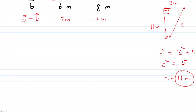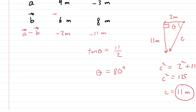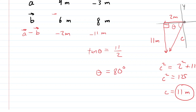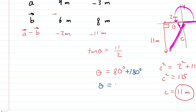For Part J, we need this angle. The tangent of that angle equals the side opposite over the side adjacent. Taking the inverse tangent of 11/2 gives about 80 degrees. However, we must report this angle carefully. Superimposing the axes at the origin, to get from the positive x-axis to this vector, we travel 180 degrees to the negative x-axis and then add theta — so we add 80 degrees to 180 degrees. We end up with 260 degrees measured counterclockwise from the positive x-axis. That is the correct answer for Part J.